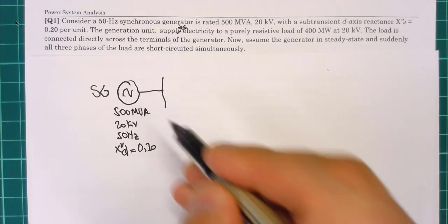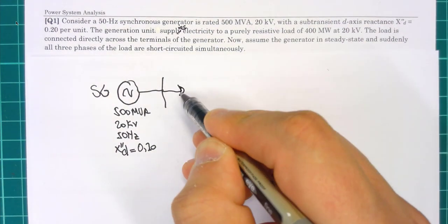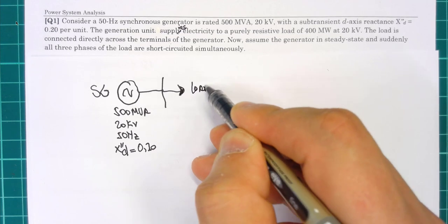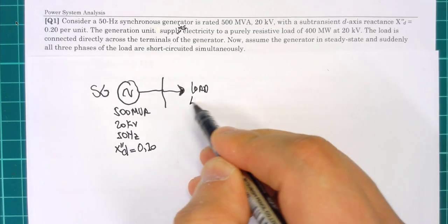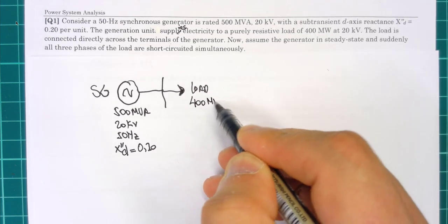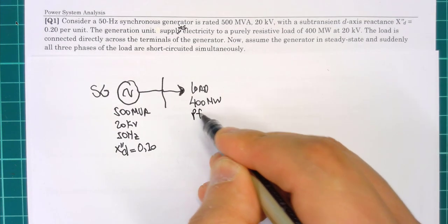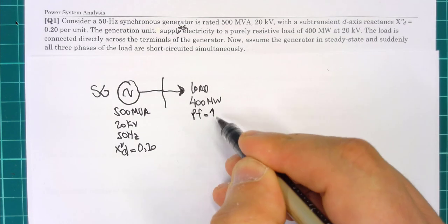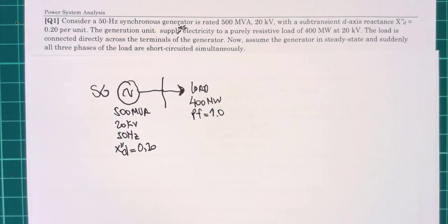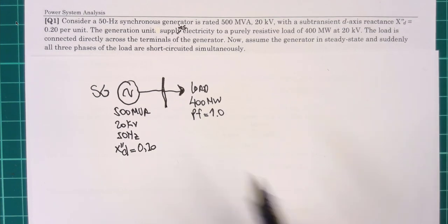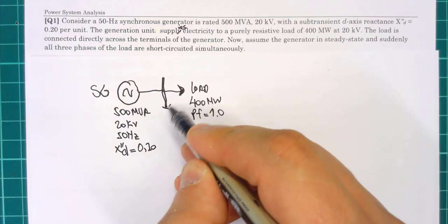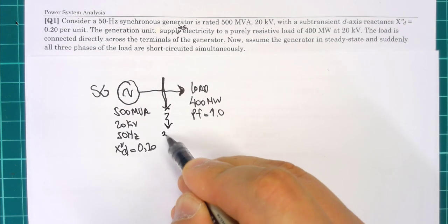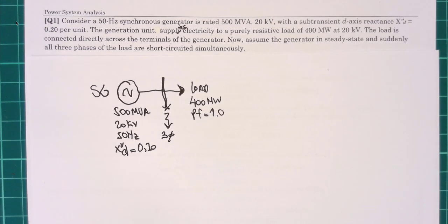The generator supplies electricity to a purely resistive load. The load is 400 megawatts with power factor equal to one, at 20 kV. Suddenly there is a three-phase short circuit at the terminal.